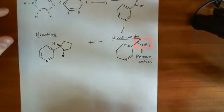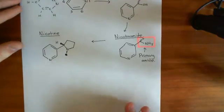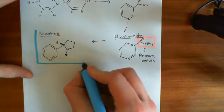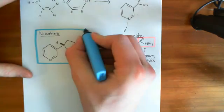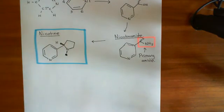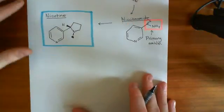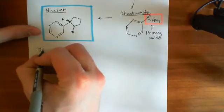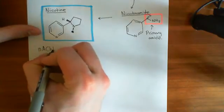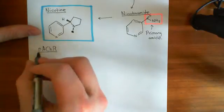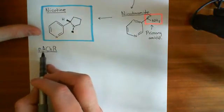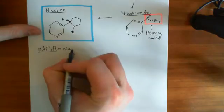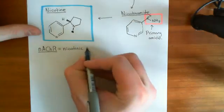Let's now talk about the nicotinic acetylcholine receptors, because nicotine is basically an agonist at a huge number of nicotinic acetylcholine receptors. Nicotinic acetylcholine receptors are often denoted nAChR — the 'n' means nicotinic, the 'ACh' means acetylcholine, and the 'R' means receptor.